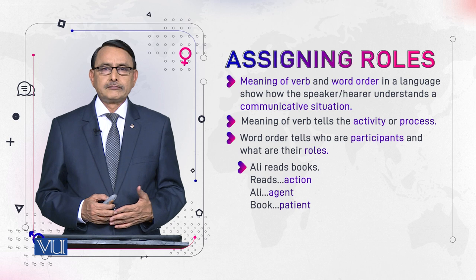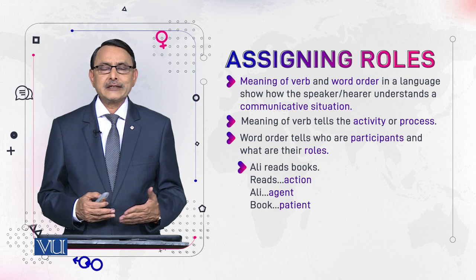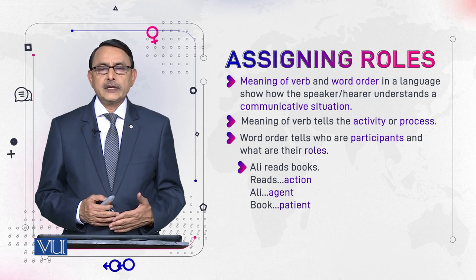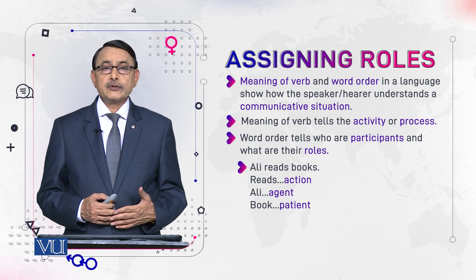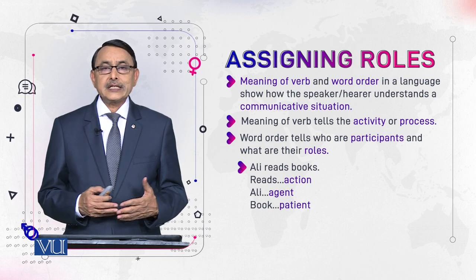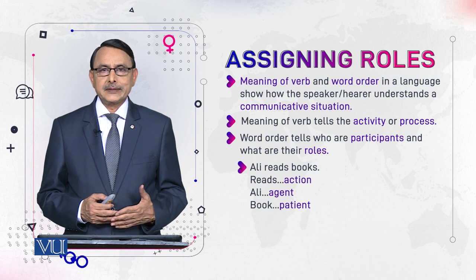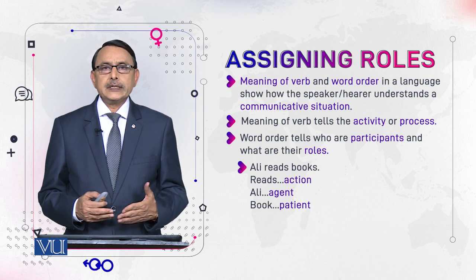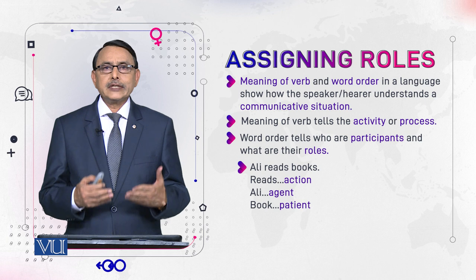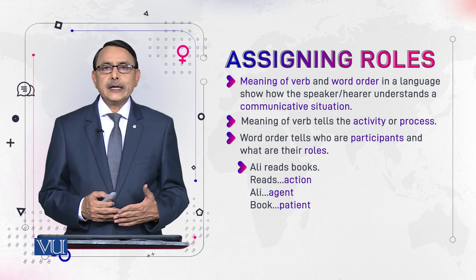In one module, while talking about second persons in some languages, we already talked about the involvement of grammar in relating gender with language. But this time, you will see how the meaning of a verb and word order tells us, in a communicative situation, what would be the role of participants — who will be doing something, and who will receive the effect of that doing. In this way, we will understand the gender and language relationship.